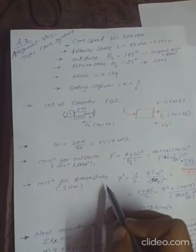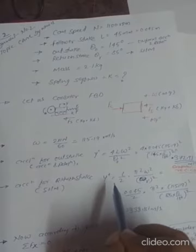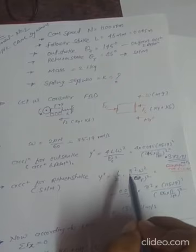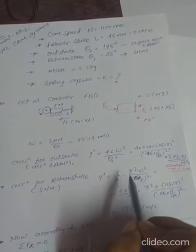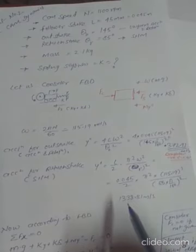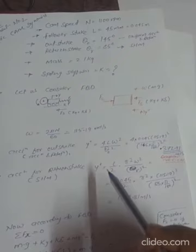Similarly, we need to calculate the acceleration for the return stroke, where the motion is simple harmonic motion (SHM). The formula for SHM from the Theory of Machines book is ÿ = (L/2) · (π²ω²/θᵣ²). After calculation, we get 1338.81 m/s². So we now have two accelerations: one for outstroke and one for return stroke, which will be used to calculate spring stiffness K.